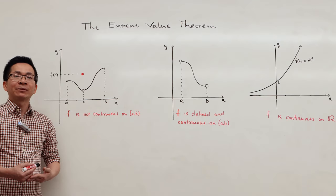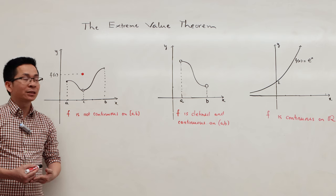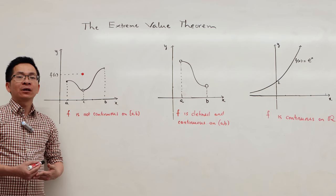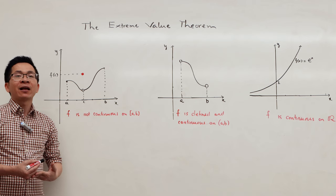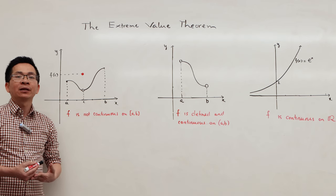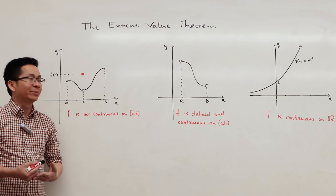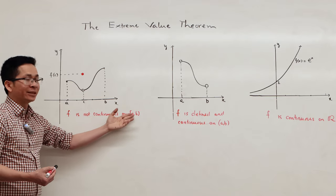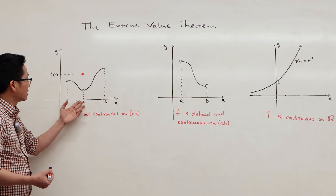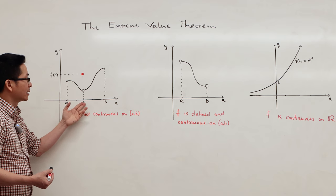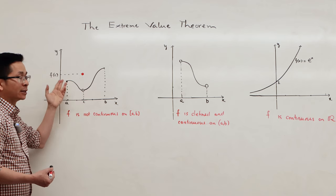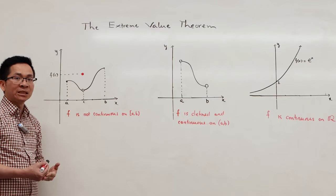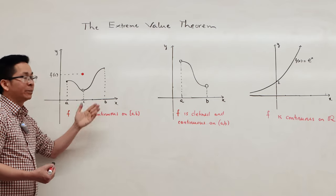Now I'm going to give some examples to show that the extreme value theorem could fail if we do not assume that f is continuous on a closed bounded interval ab. In the first example, f is not continuous on the interval ab. In particular, f is not continuous at c, and this is f of c.